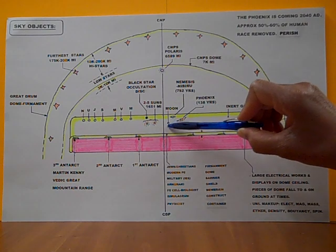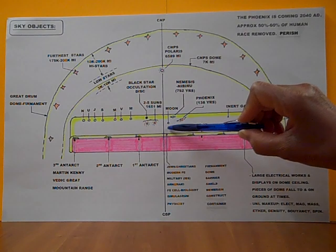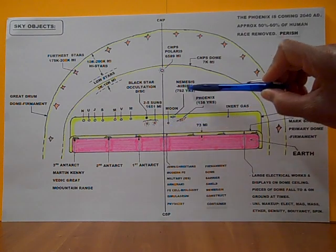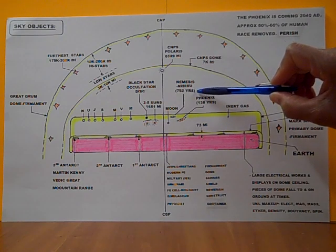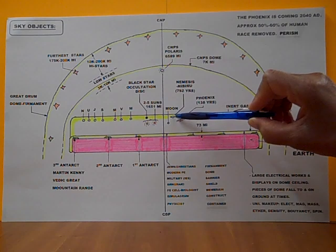Here is the moon, which is 1,550 to 1,600 miles above the earth's surface. And here is Nemesis. It comes every 792 years like clockwork. Nemesis Nibiru.